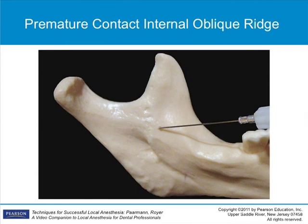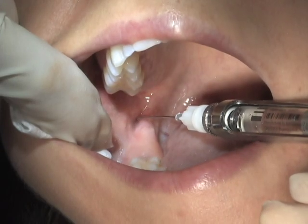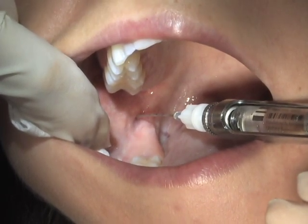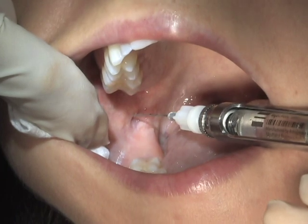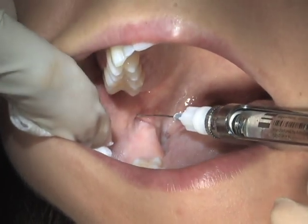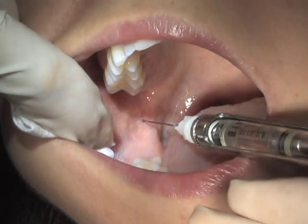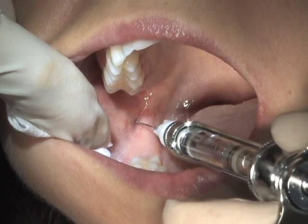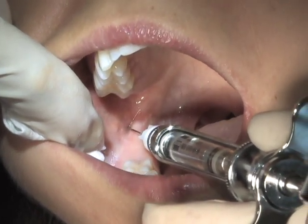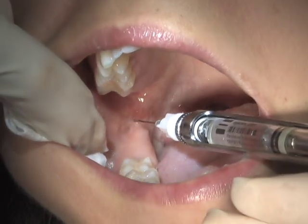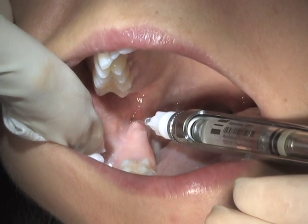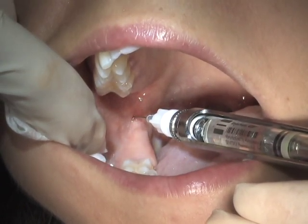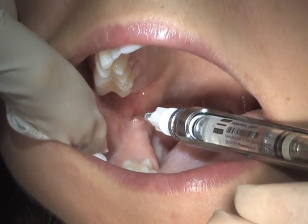In some cases, bone may be contacted prematurely — that is, when half the length or less of the long needle is inserted. When this occurs, the needle has likely been inserted too far laterally and/or too low. To correct this, withdraw the needle half the length from the tissue without completely removing it, and redirect the barrel of the syringe more anteriorly toward the lateral or central incisors. Slowly advance the needle beyond the original depth and past the obstacle, then redirect the barrel over the contralateral premolars. Advance until periosteum is gently touched, then aspirate and slowly deposit as described previously.